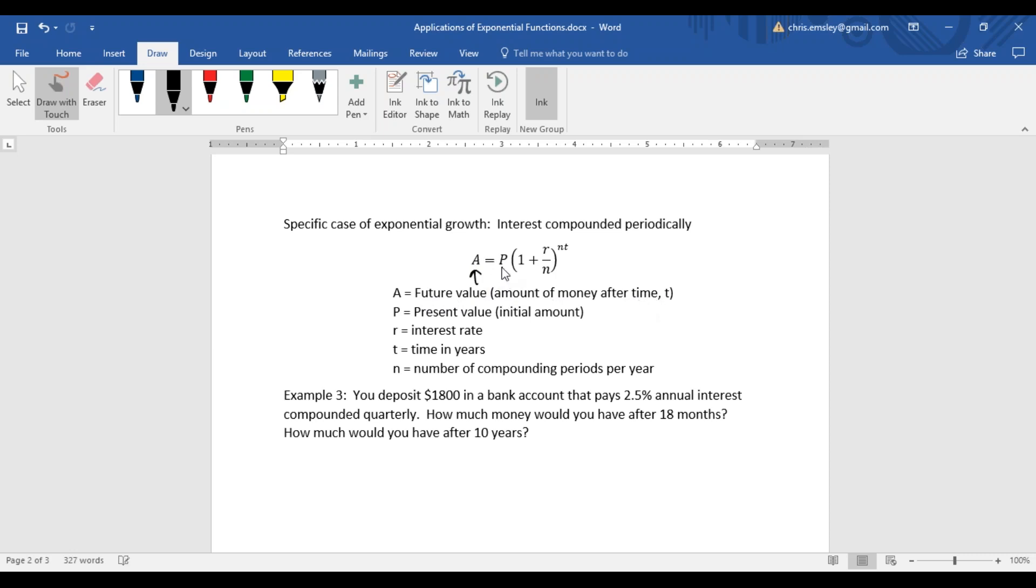Then we have our next variable, P, the present value, our starting amount. Since we're gaining interest, the money is growing, we have 1 plus. Our interest rate is the rate divided by n, which is the number of compounding periods in a year. And then our exponent is not just t, it's n times t.